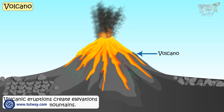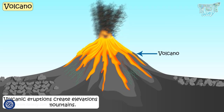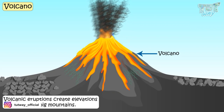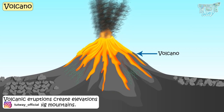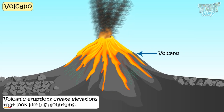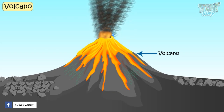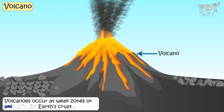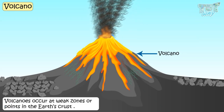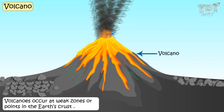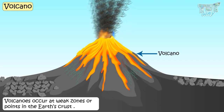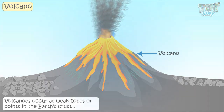Volcanic eruptions create elevations that look like big mountains. Volcanoes occur at weak zones or points in the Earth's crust. Now let's learn about the various parts of volcanoes.